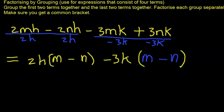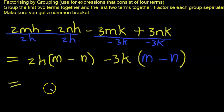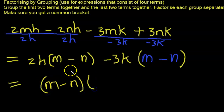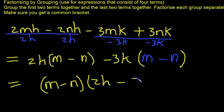You can do a quick check to ensure you factored correctly — expand the bracket and confirm you get the original expression. We have a common factor of (M minus N). Factoring out (M minus N), we are left with 2H minus 3K. So the final answer is (M minus N)(2H minus 3K), and we are done.